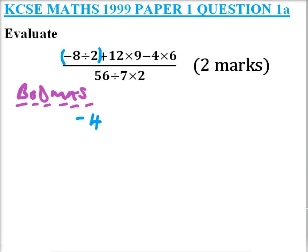From there we can look at multiplication. We have divided, so we say plus, the other one is multiplication. So we are going to multiply 12 times 9, that will give you 108.